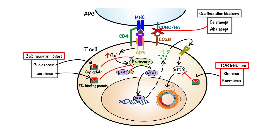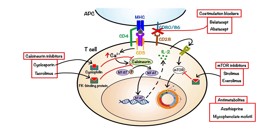Moving on to immunosuppressive anti-metabolites: the two most commonly used agents in this class are azathioprine and mycophenolate mofetil, which have similar but unique mechanisms of action. Azathioprine is first activated to become 6-mercaptopurine, 6-MP for short, which is then further metabolized to form purine analogues that mimic the structure of a building block of DNA. These false purines can disrupt the de novo pathway of purine synthesis, as well as become incorporated into DNA and RNA, thus terminating their synthesis and ultimately inhibiting cellular proliferation.